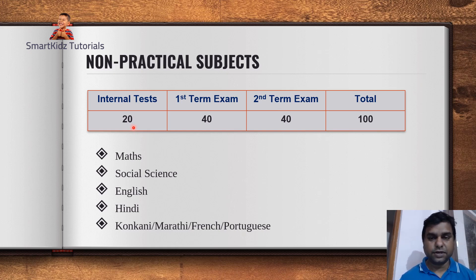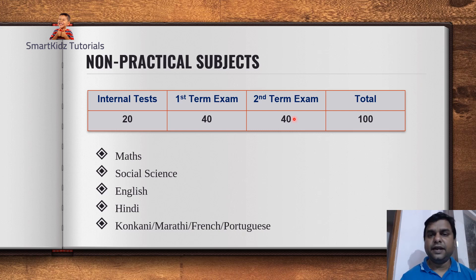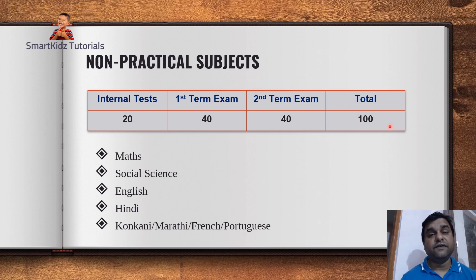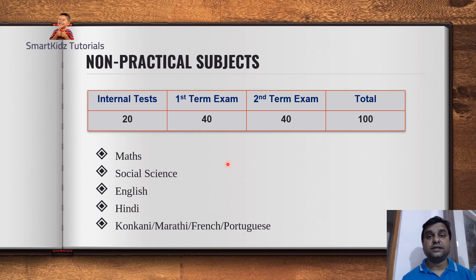For Maths, your project work constitutes 20 marks for internals. The MCQ exam was 40 marks, and the second term exam was also 40 marks. So let's say in your MCQ you got 20 out of 40, and in your second term you got 40 out of 40. That gives 20 plus 40 equals 60, and if your internal marks are 18, then 60 plus 18 equals 78 out of 100. For English and Hindi, the same formula applies.